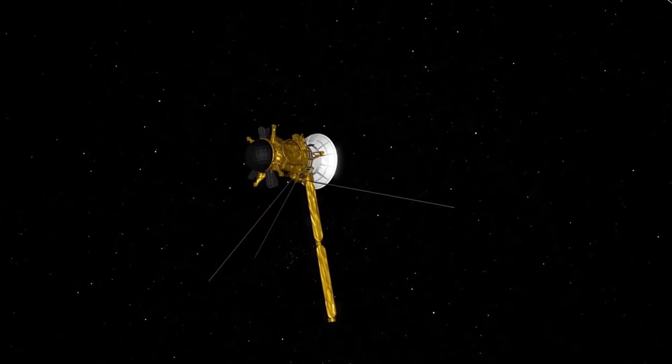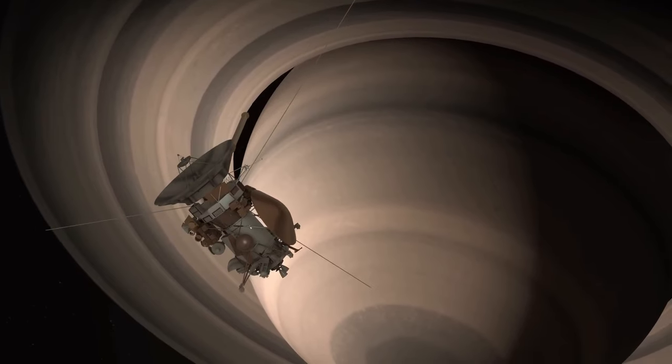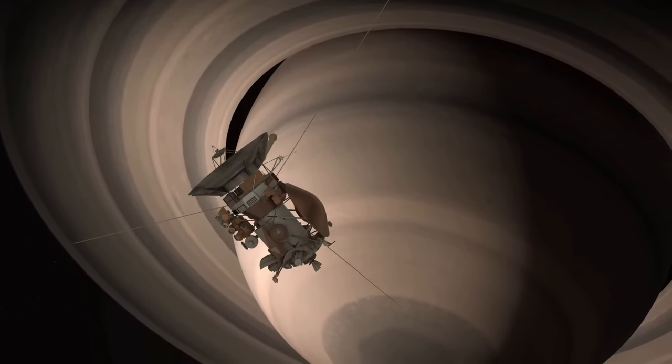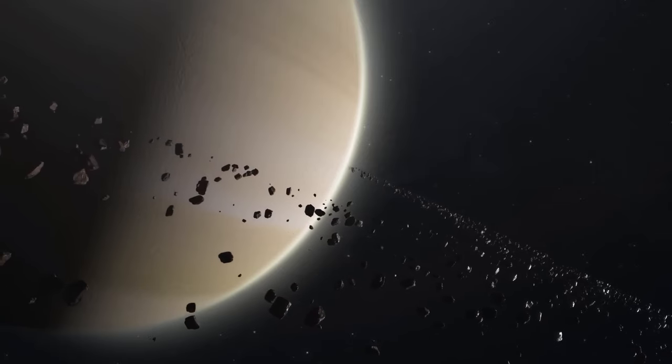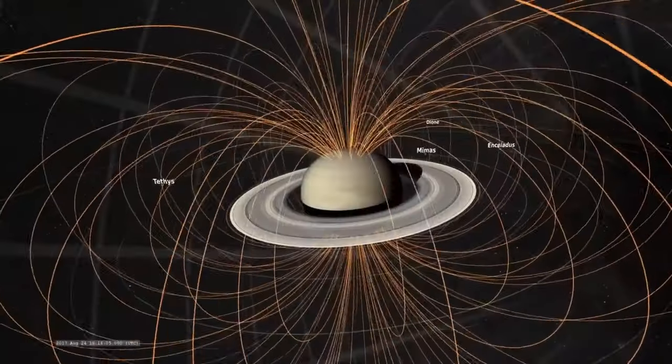Today, we understand much about Saturn's rings, but they continue to defy our expectations. The particles within these rings, made mostly of water ice, are delicately balanced between Saturn's gravitational pull and their orbital velocity.